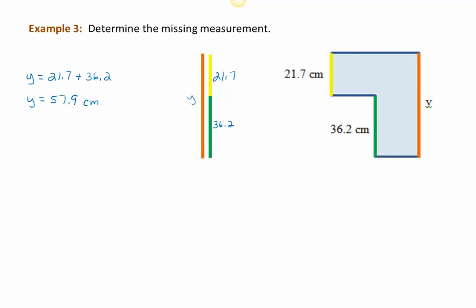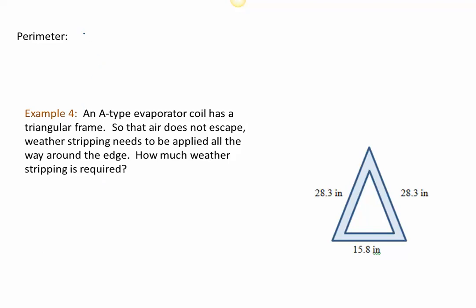Let's shift to a different topic and talk about perimeter. Perimeter is the distance around the outside of a figure. If our figure has straight sides, then perimeter is the sum of all the side lengths. Here in Example 4, we're looking at a triangle. It's not really a triangle—this is a representation of the triangular frame of an A-type evaporator coil.